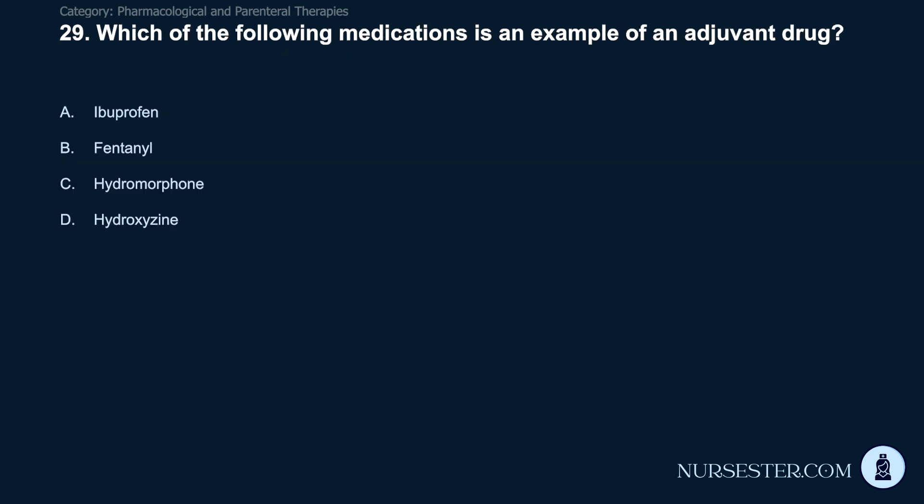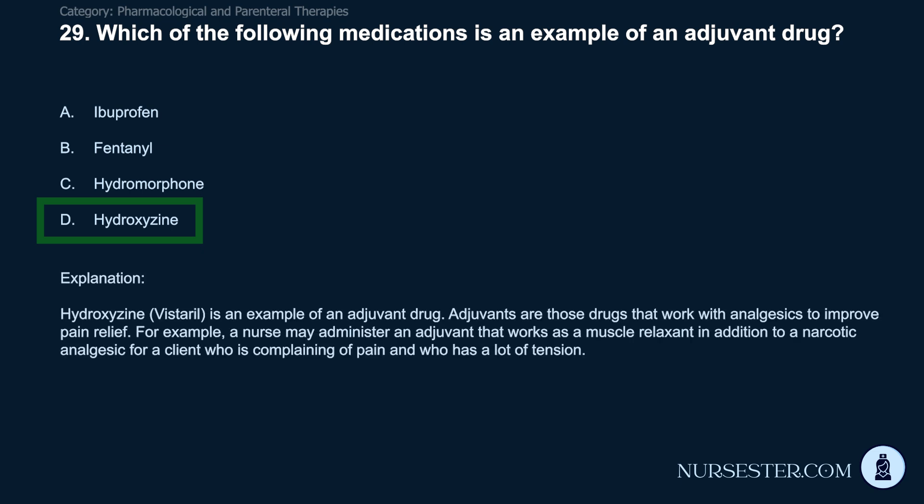Question 29: Which medication is an example of an adjuvant drug? A) Ibuprofen. B) Fentanyl. C) Hydromorphone. D) Hydroxyzine. Correct answer: D. Hydroxyzine (Vistaril) is an example of an adjuvant drug. Adjuvants are drugs that work with analgesics to improve pain relief. For example, a nurse may administer an adjuvant that works as a muscle relaxant in addition to a narcotic analgesic for a client complaining of pain who has significant tension.